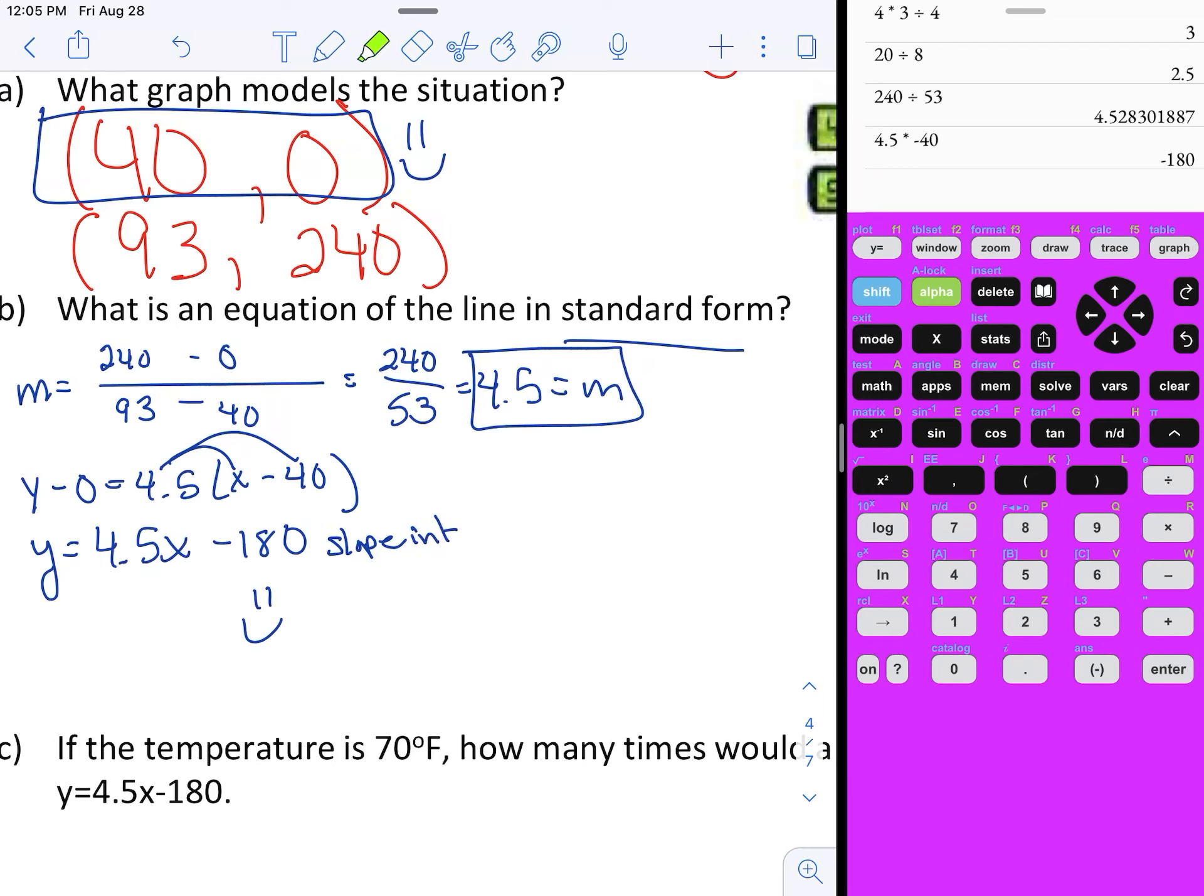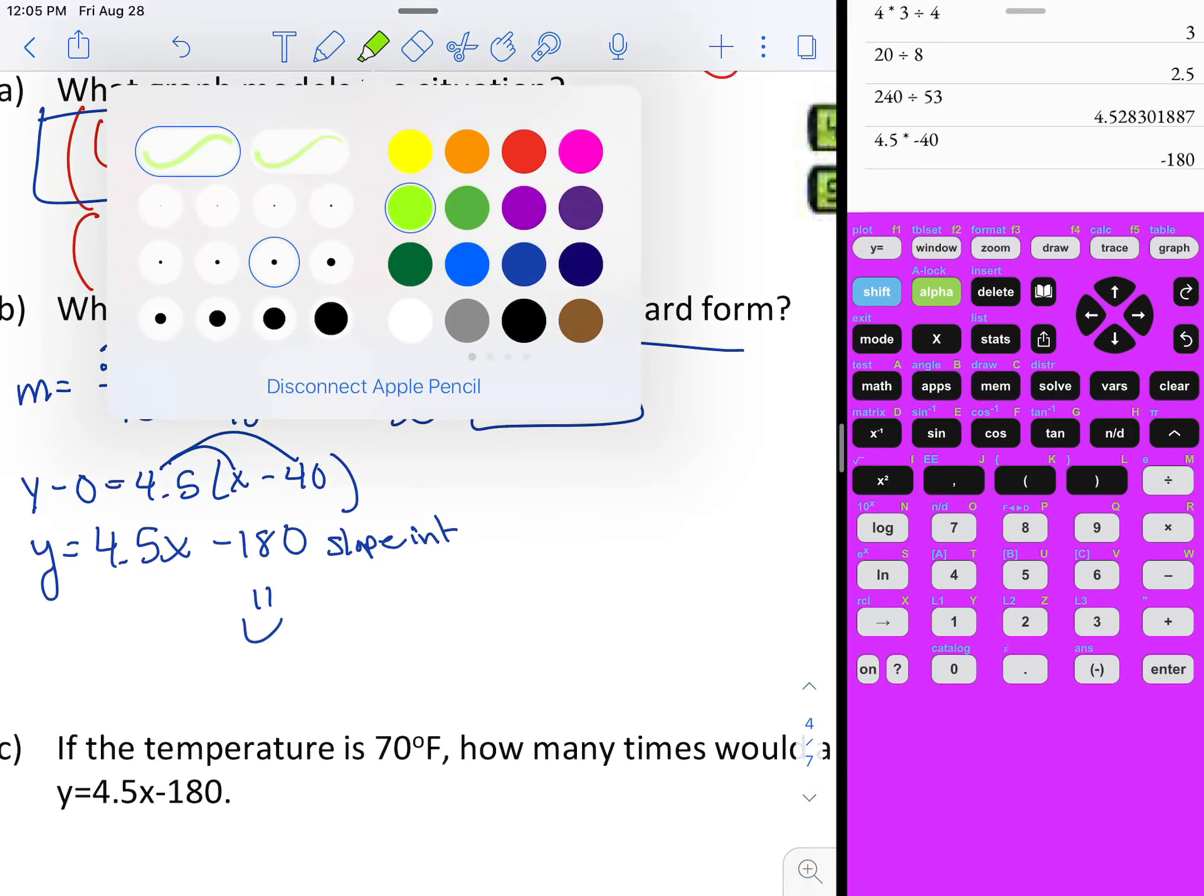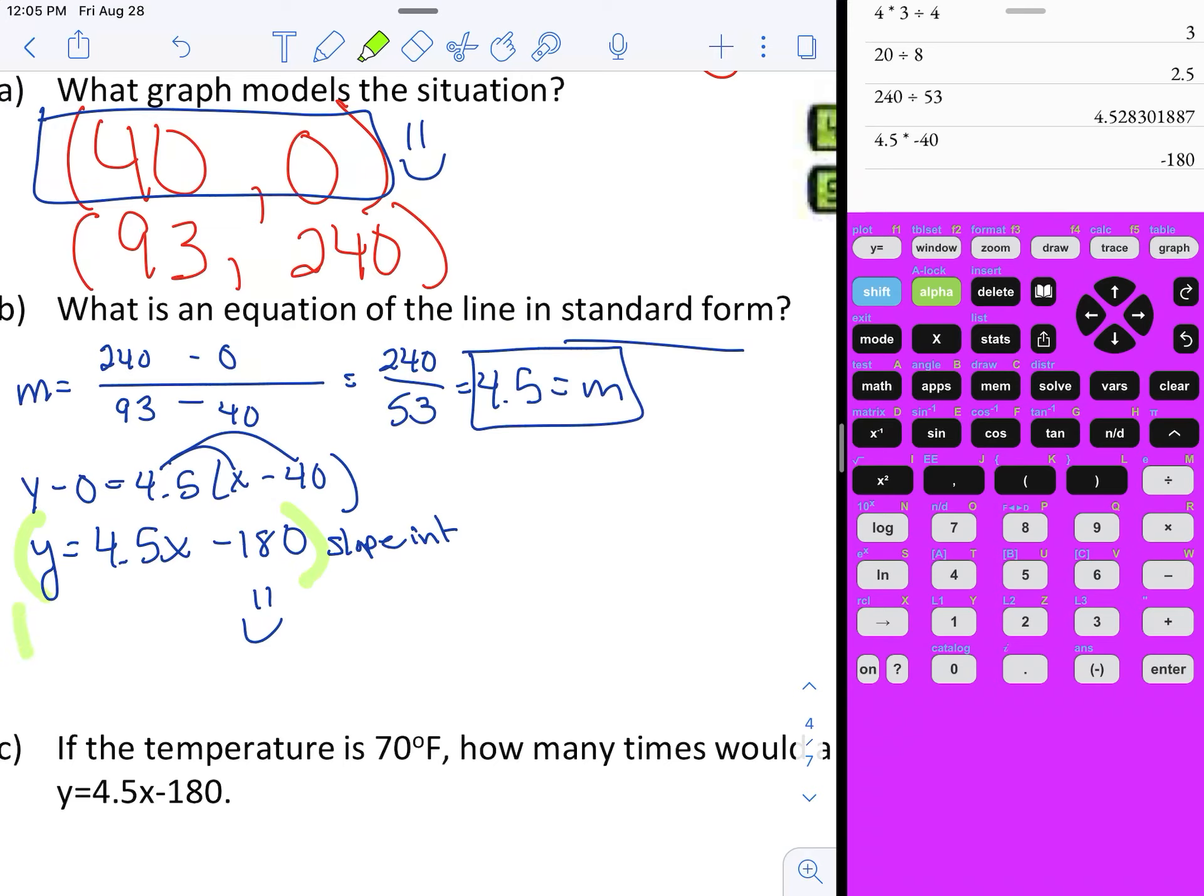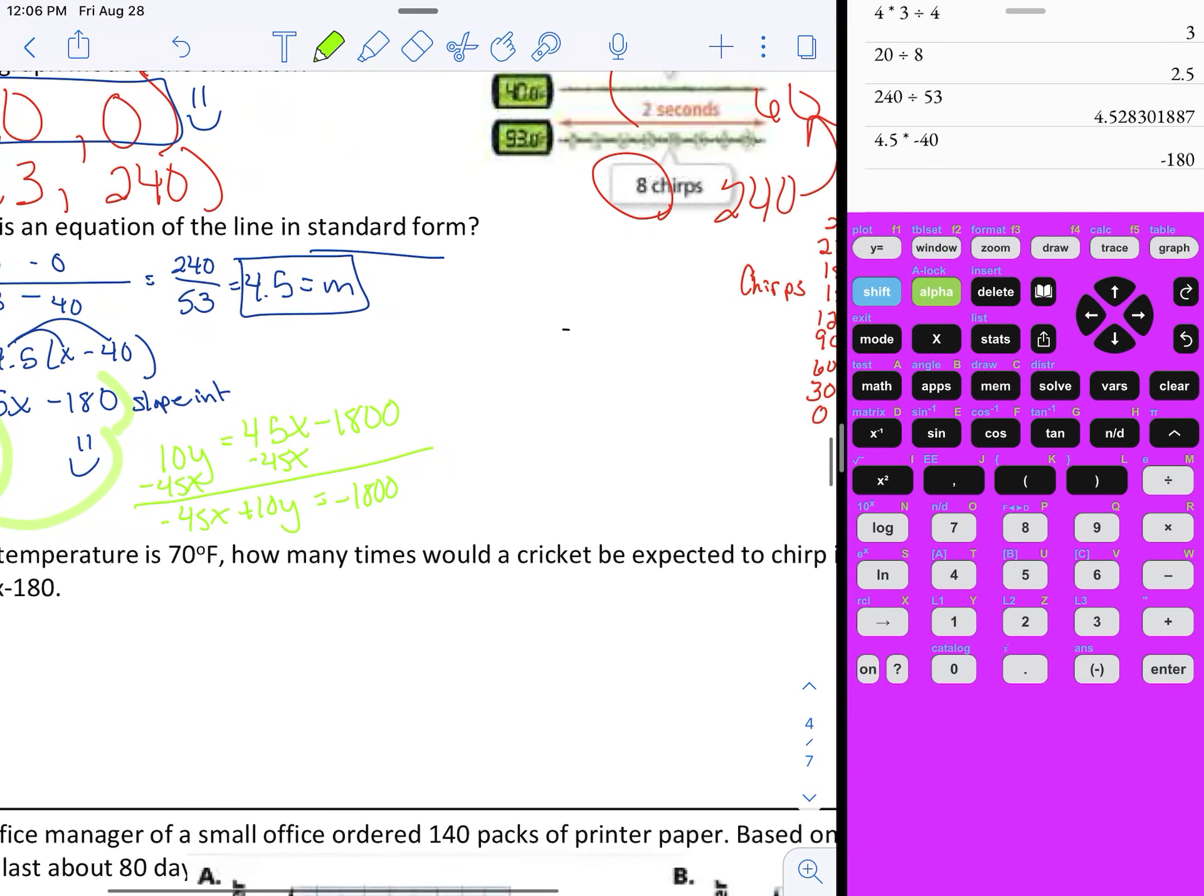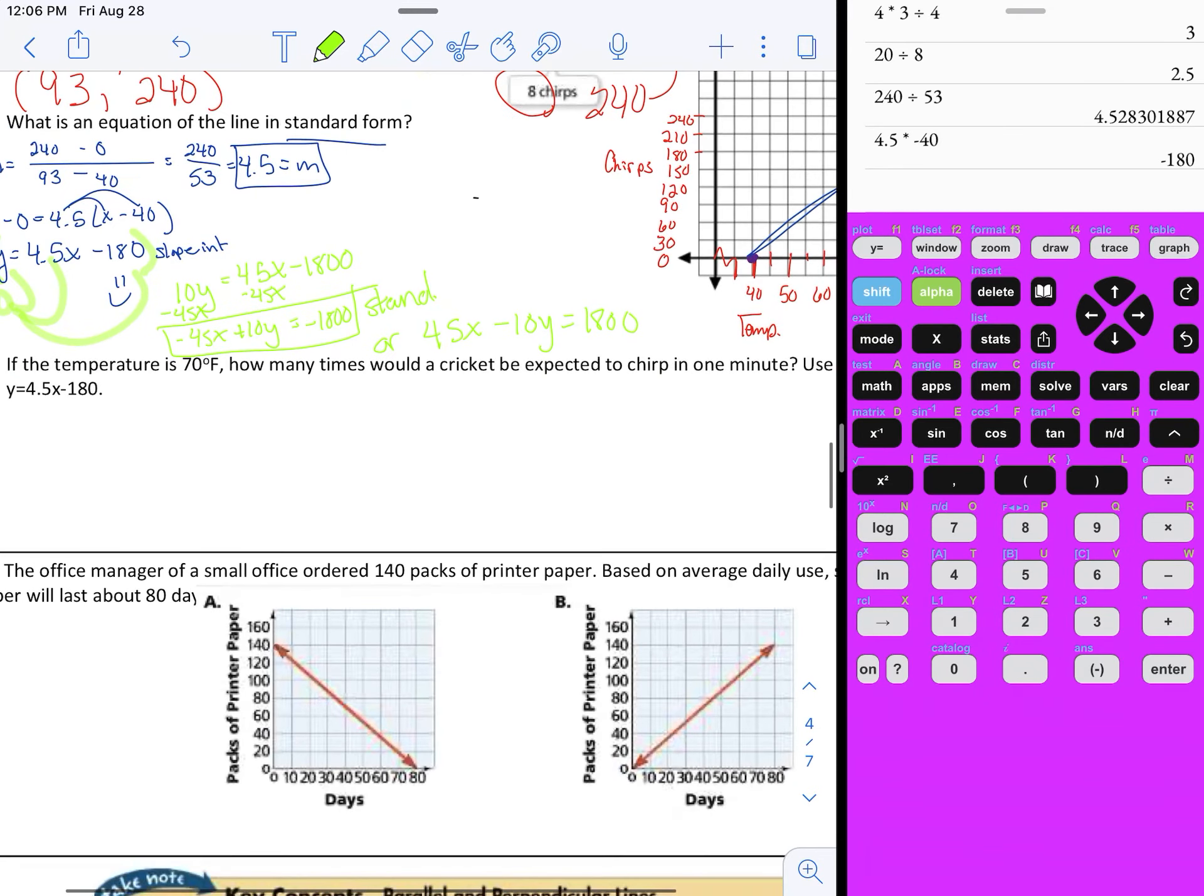They want it in standard form, so we need to get rid of the decimal. Multiply everything by 10. After we multiply by 10 we're going to have 10y equals 45x minus 1800. Move the 45x over: negative 45x plus 10y equals negative 1800. Divide everything by negative 1. You can leave it like that, this is totally fine. This is standard form because we don't have any fractions or decimals and everything's on the left.